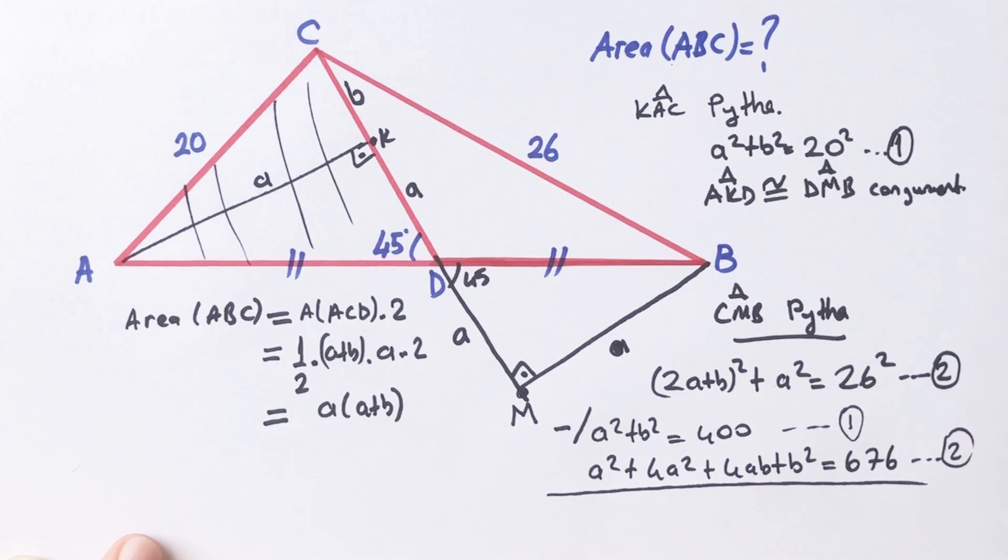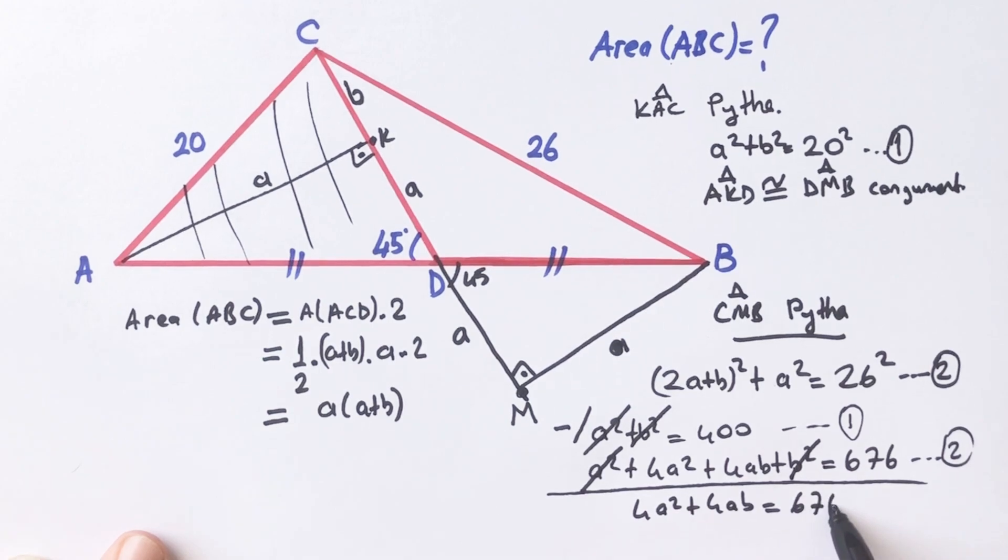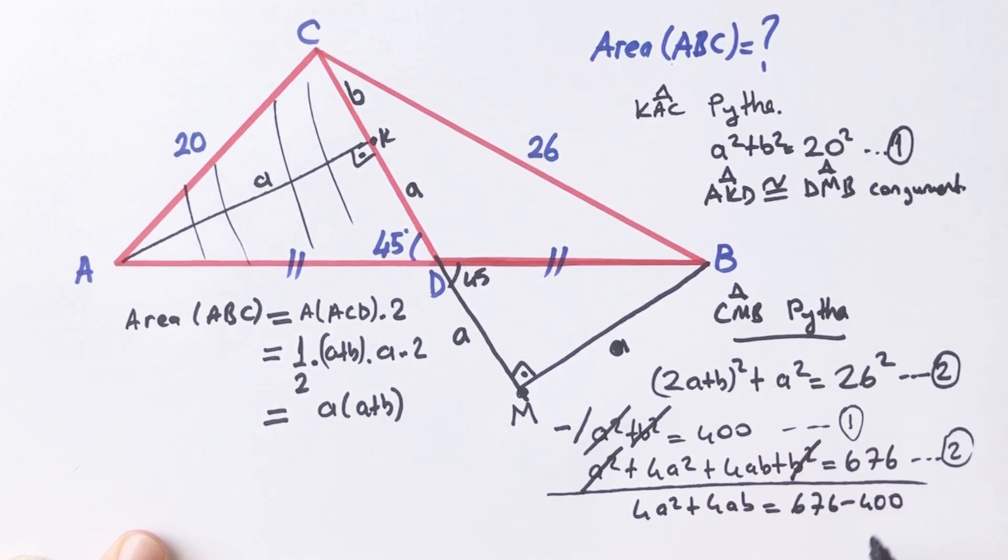If we subtract first equation from second equation, a squared plus 4a squared plus 4ab equals 676 minus 400.